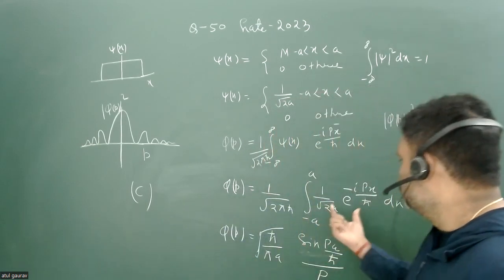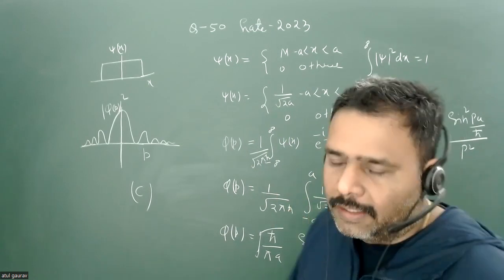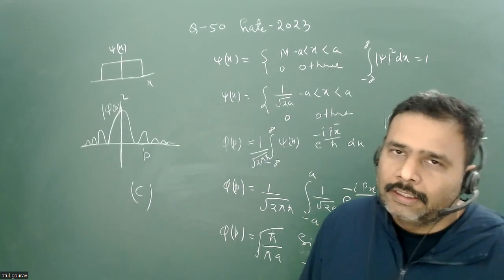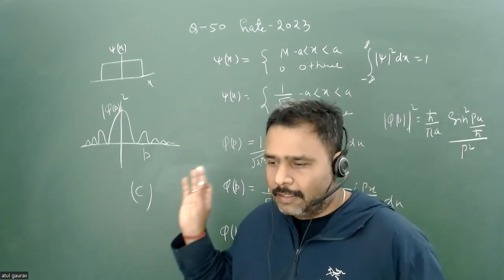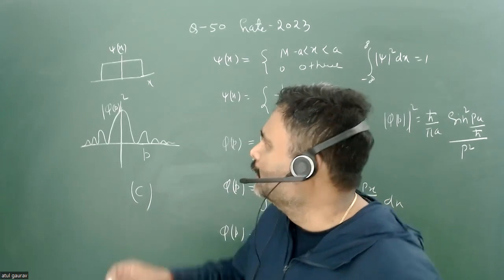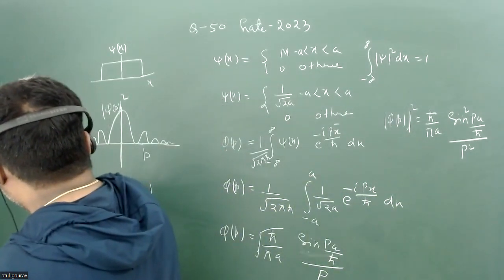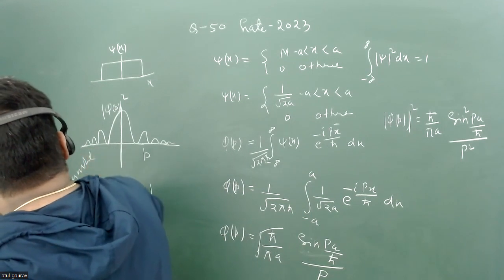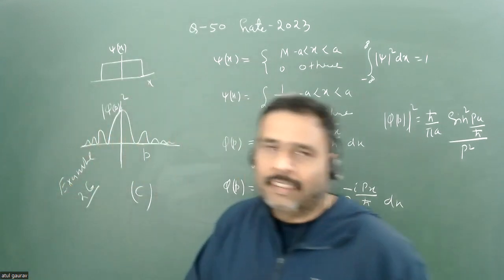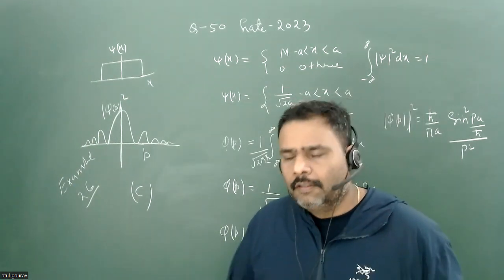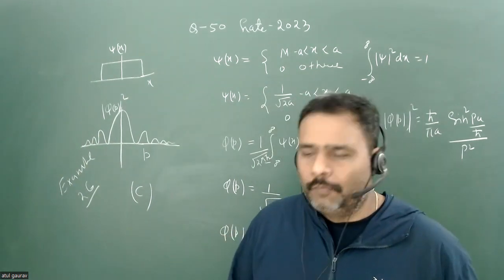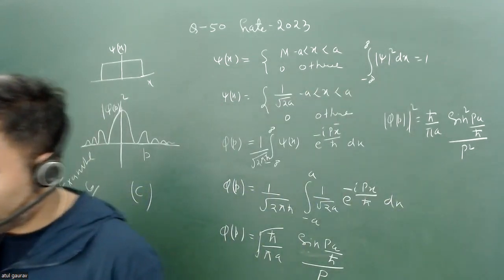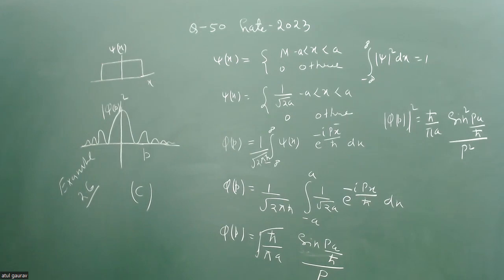The concept is very simple: whenever you want to go from one space to another — position space to momentum space or momentum space to position space — you do the Fourier transformation. The real challenge is doing the integration. I suggest you do this integration yourself; it is very easy. If you want to do this type of problem, follow Griffiths — I think this is solved problem Example 2.6. Thank you.